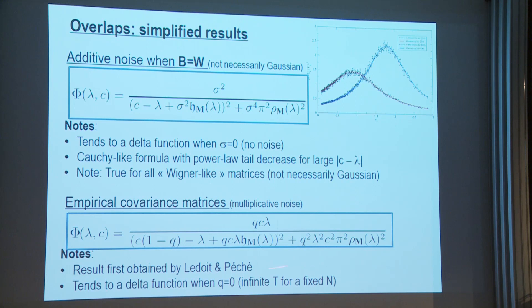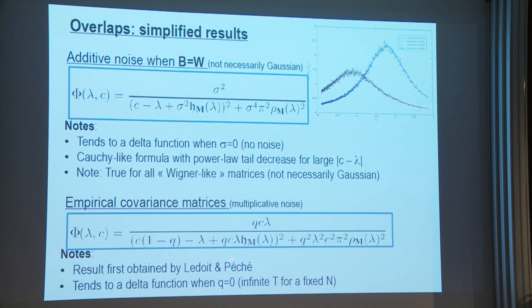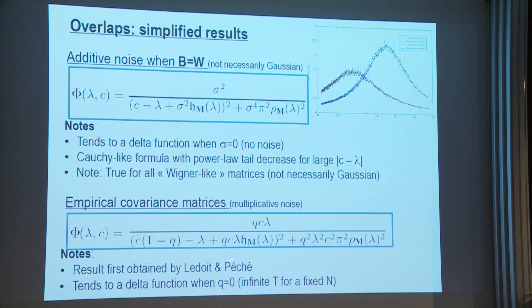There's a similar result for multiplicative noise. For empirical covariance matrices, you get an explicit formula where the Q factor appears — the ratio of matrix size to time series length. When Q → 0, meaning you have far more data points than time series, the overlap tends to a delta function as expected. This explicit result was obtained in 2011 in a beautiful paper by Ludwig and Péché.